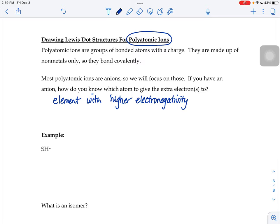In this example where it's SH minus, if you don't see a number next to the minus, that means it's a minus 1. So let's look up the electronegativity values for S and H, and then we're going to decide who's going to get that extra electron.